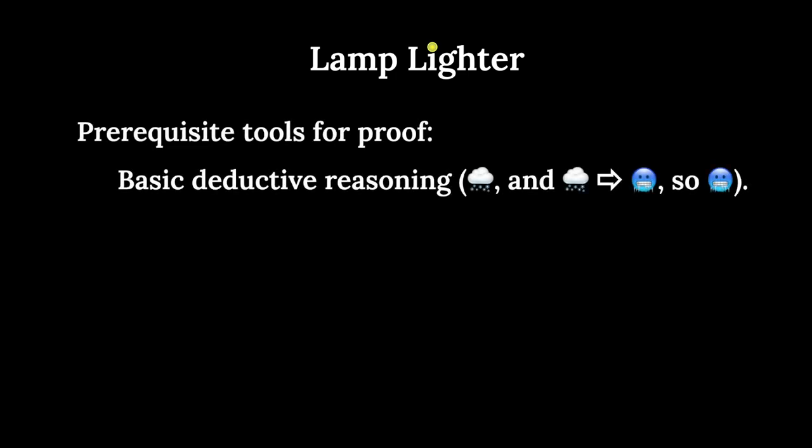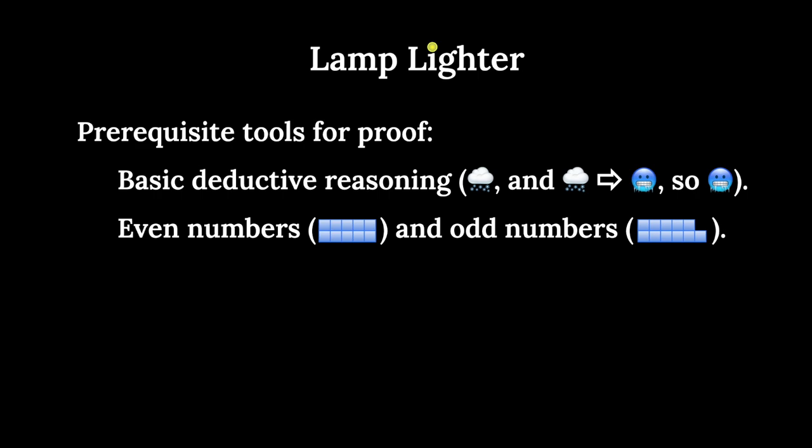What's more impressive, the proof is very accessible. You need very little prior knowledge - just remember your basic deductive reasoning, like if it's snowing outside and snow means it's cold, it must be cold outside, even numbers and odd numbers, and patience. If you have to stop or rewind, that's completely normal. We're going to take these simple ideas and build some more complex ones.